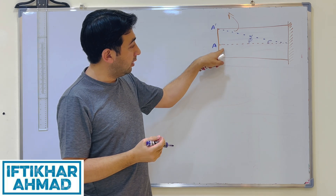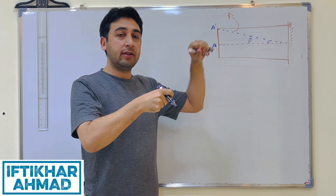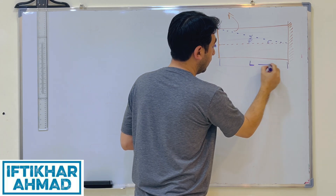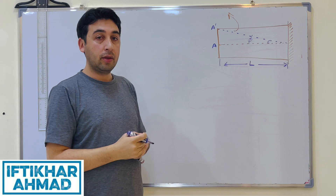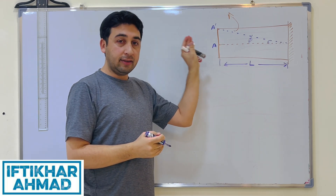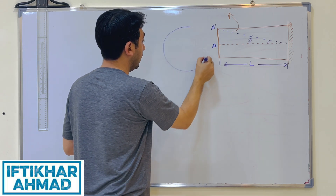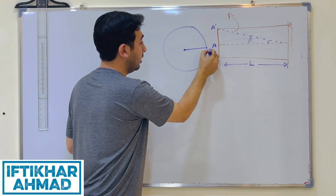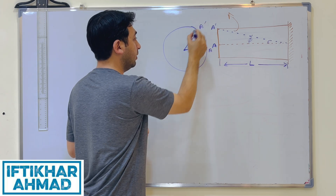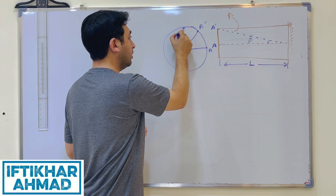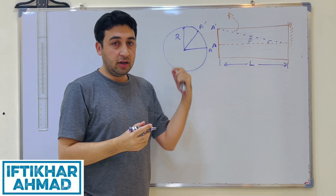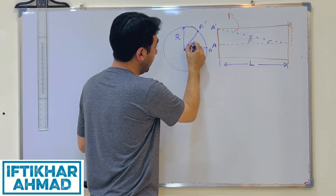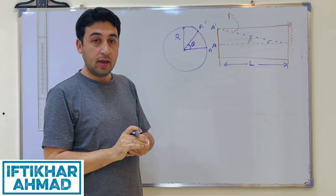Point A was initially here; then we applied some torque to the shaft and now it is at A-dash. The length of the shaft is L. If we look at the cross-section from the end, since this is a circular shaft, we see A and A-dash. The radius of the shaft is r and the diameter is d. The angle theta between A and A-dash is the angle of twist that the point has covered.